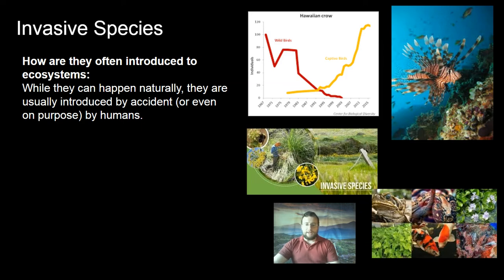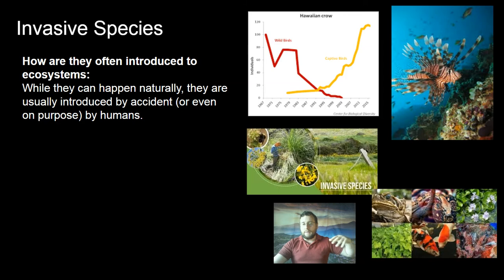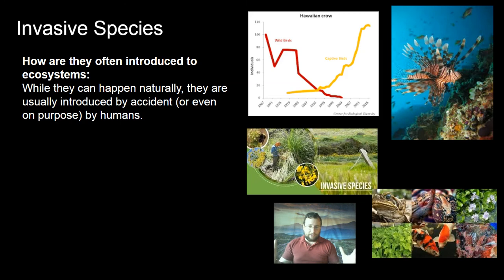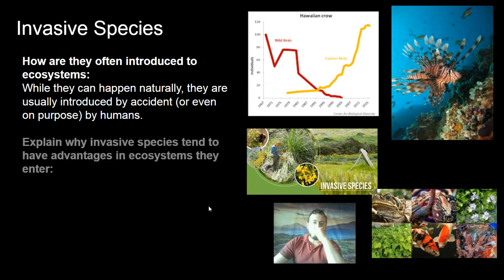Whether it's releasing a pet to the wild that meets another released pet and suddenly multiplies in the ecosystem, or purposely bringing in a species to fix a problem but causing a new invasive species issue — there are lots of examples. Animals hitchhike in planes, cars, trucks, trains, and boats. As the world became a global place, we constantly carry species from one place to another. That includes viruses and bacteria, which is why so many emergent diseases travel across the world.